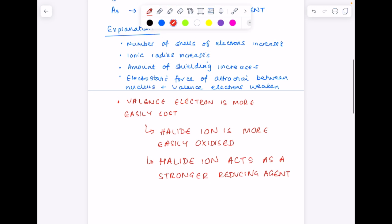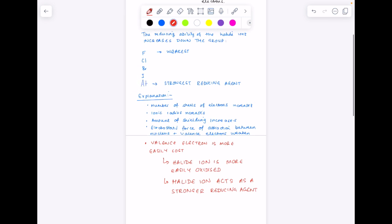So if you're asked in the exam to explain why the reducing ability of the halide ions increases down the group, you need to be talking about the number of shells of electrons increasing, meaning the amount of shielding increases. So the attraction between the nucleus and the valence electrons weakens. That valence electron is more easily lost. The halide ion is more easily oxidized. The halide ion acts as a stronger reducing agent.